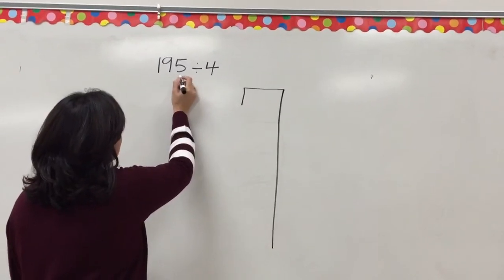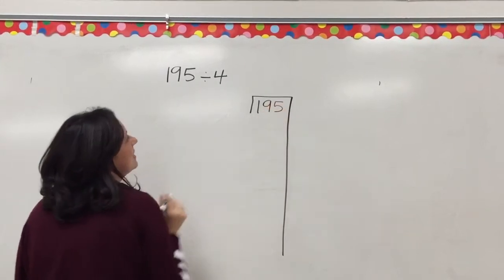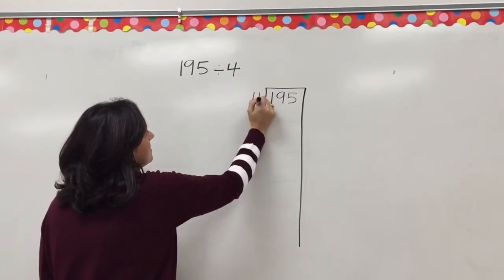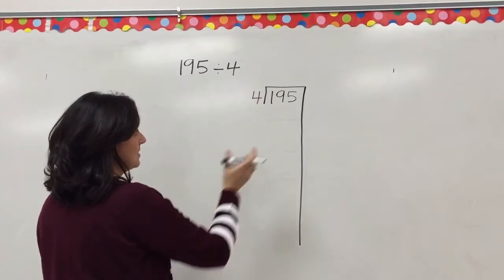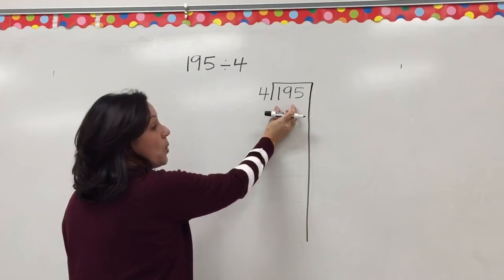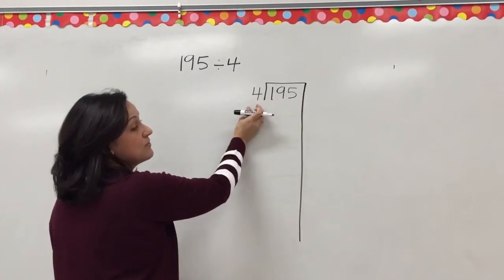We take the first number, the dividend, and the dividend goes inside the division house. And the second number, the divisor, goes on the outside. So we're asking ourselves, how many times will 4 fit into 195? Or, if we have 195 things, how many groups of 4 could we make?